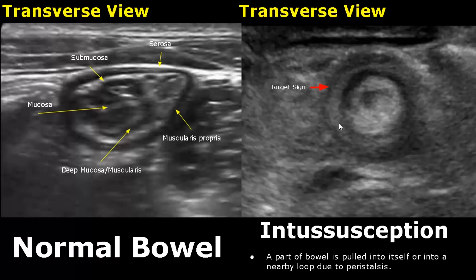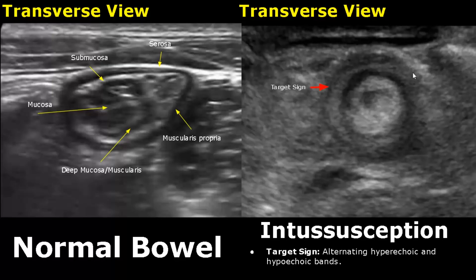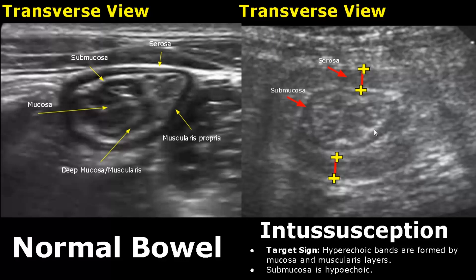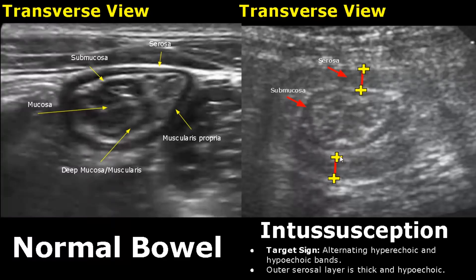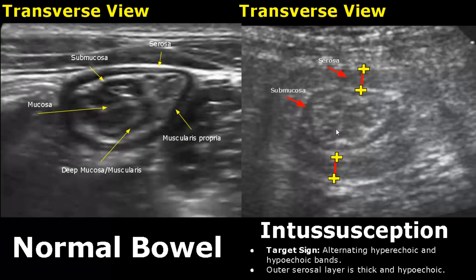Intussusception occurs when a part of the bowel is pulled into itself or into a nearby loop due to peristalsis. On ultrasound, a target sign is seen — there will be alternating hyperechoic and hypoechoic bands. The hyperechoic bands are formed by the mucosa and muscularis layers. The normal submucosa is supposed to be hyperechoic, but in this case it is hypoechoic. The outermost serosal layer is very thick and normally hyperechoic, but here it is hypoechoic. The serosal layer appearance is easier to see compared to the inner layers like submucosa.